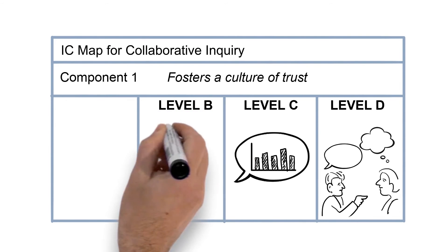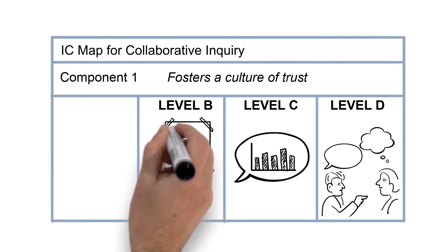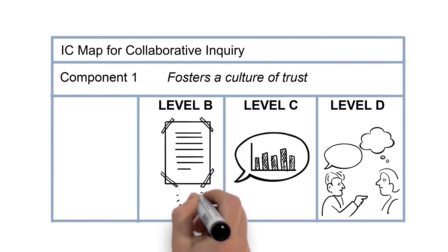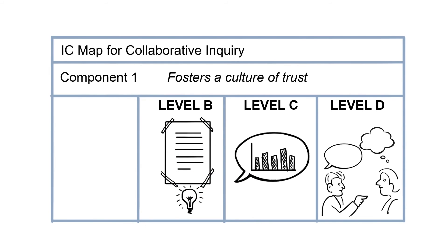At Level B, the meeting norms are posted on the wall and protocols are being implemented. The conversations are becoming more student-centered, but no solutions are reached — everyone is satisfied with good enough.